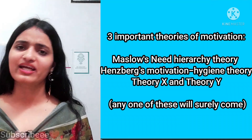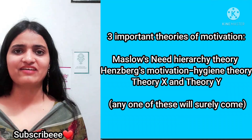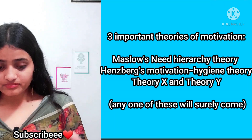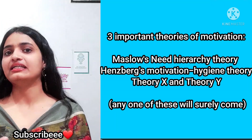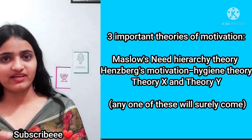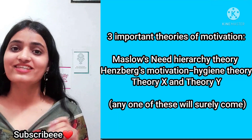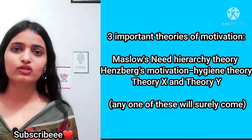How to read the answers, how to read the points, how to read the paragraphs — all covered. Maslow's theory, Herzberg's theory, and Theory X and Y — don't skip them. They are worth 10 to 15 marks, both in short and long form.